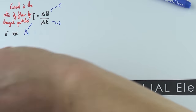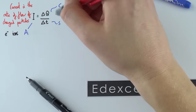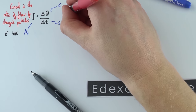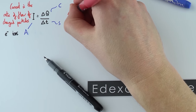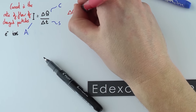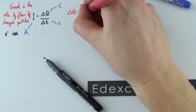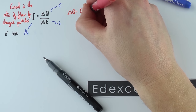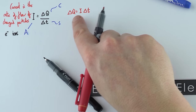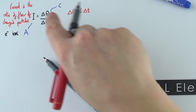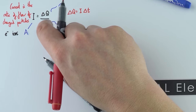We can also write this equation as: the charge transferred is equal to the current times the change in time. So Q equals IT is another form of this.